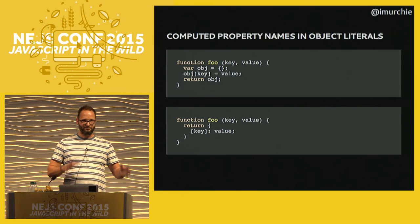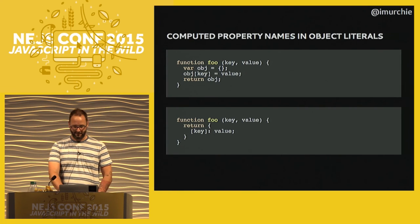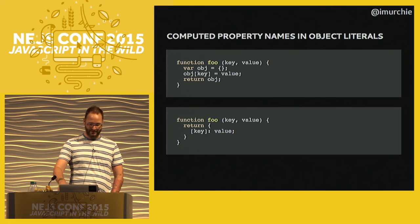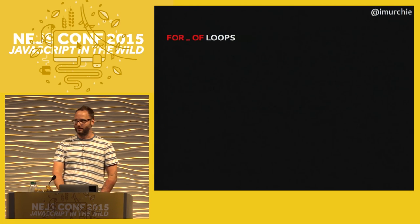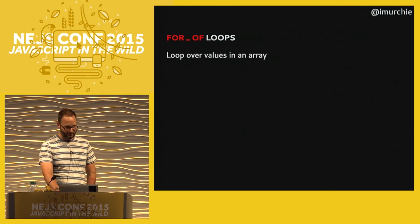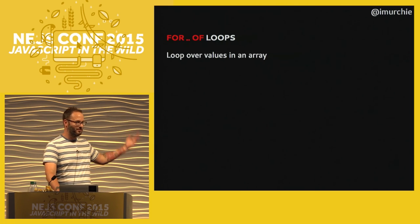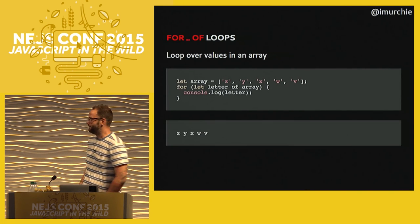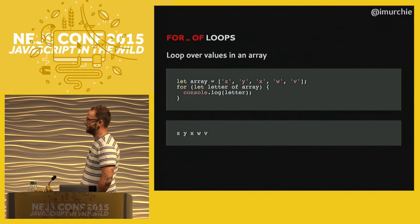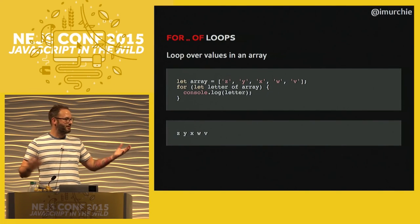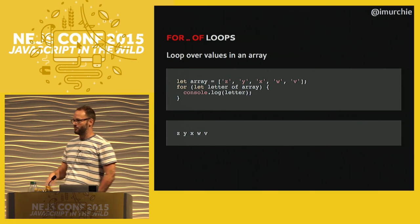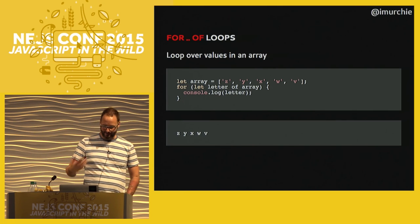Moving towards code that says what it means and means what it says — for-of loops loop over the values in an array, as opposed to for-in loops that loop over the indexes. You straight up console.log the variables created, and like the normal for-loop, the variable is essentially new in each iteration of the for-loop. So if you close over it and have a function called later, it will have the value of that particular iteration rather than constantly changing.